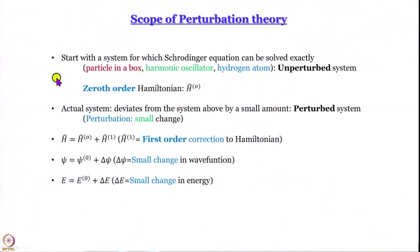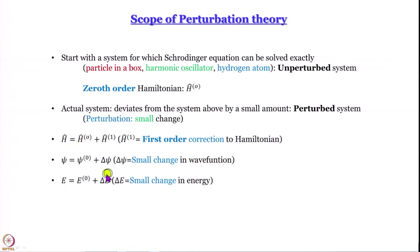Before we do that, let us quickly recap what we have discussed already. The scope of perturbation theory is that it works when the deviation from the unperturbed system is very very small. We can write the Hamiltonian of the perturbed system as the 0th order Hamiltonian plus a first order correction, the wave function as 0th order wave function plus first order correction delta psi, and the energy E as 0th order energy plus first order correction delta E.